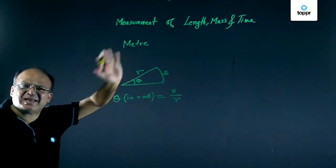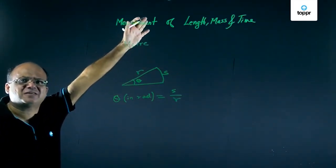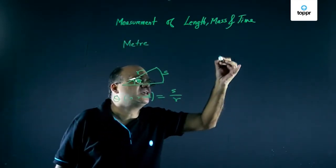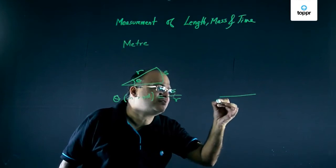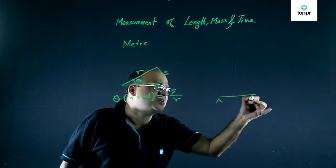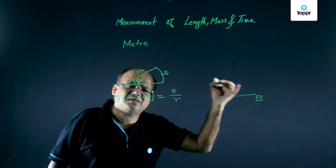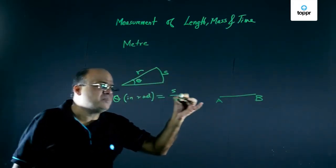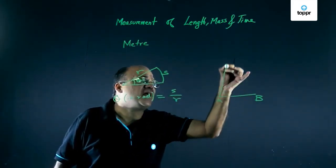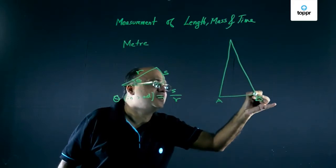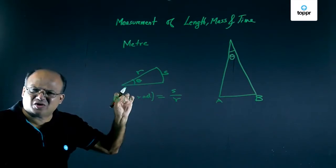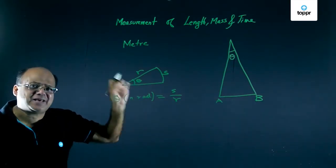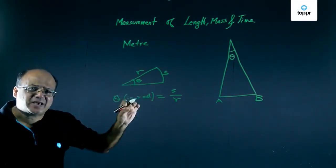Now suppose we are looking at a planet or star that is very very far away. And we look at it from two points on the Earth's surface. One point is at A, other at B. Now because the star or planet is very far away, this angle theta will be small. This theta is called parallax angle or parallactic angle.